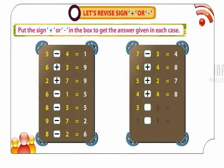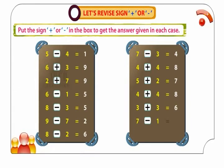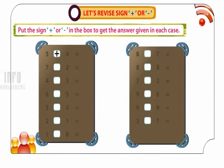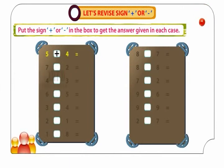3 plus 3 is equal to 6. 7 minus 1 is equal to 6. 5 plus 4 is equal to 9.